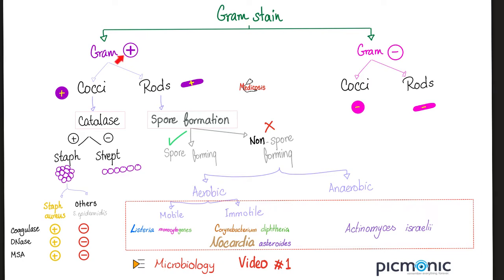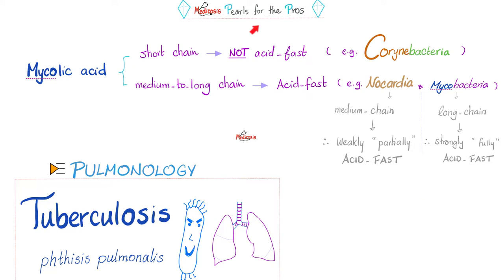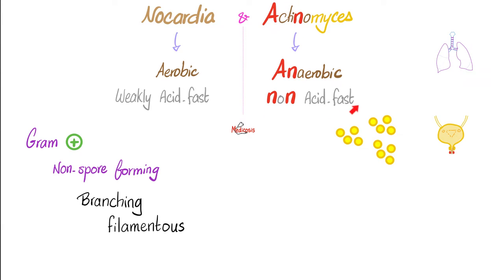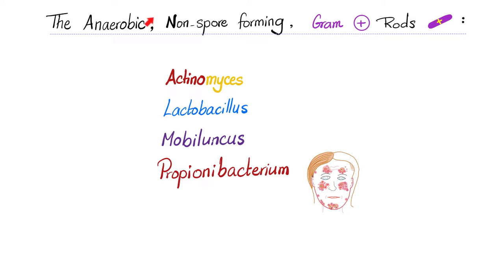Actinomyces are gram-positive rods. They are not spore-forming. They are anaerobic, not aerobic. Nocardia had medium-chain mycolic acid, which is why Nocardia was weakly acid-fast. In contrast, Actinomyces are not acid-fast. Nocardia is aerobic; Actinomyces are anaerobic. And don't ever forget the famous sulfur granules.